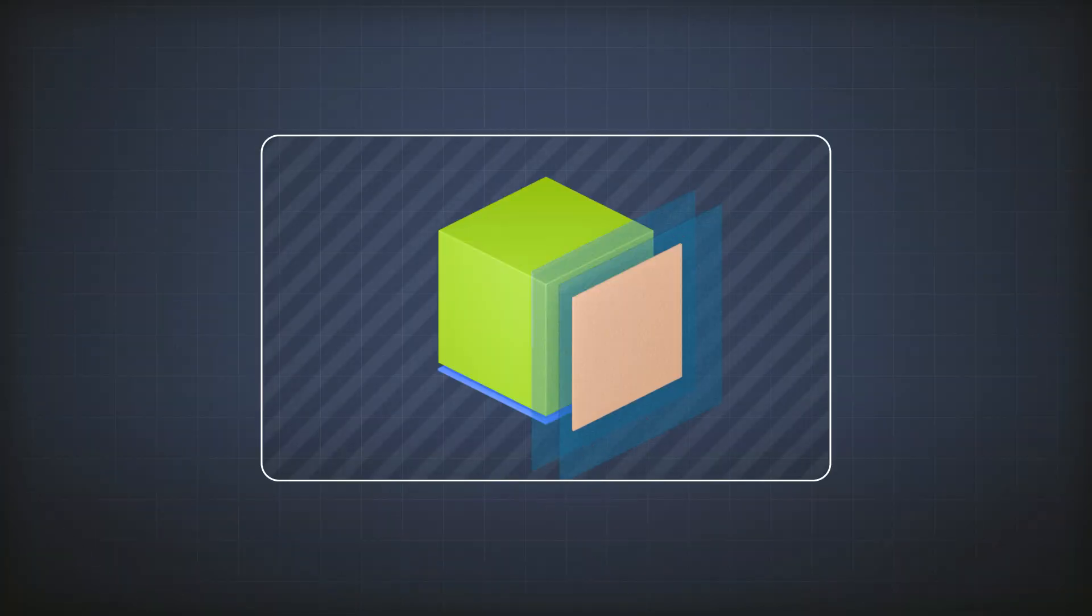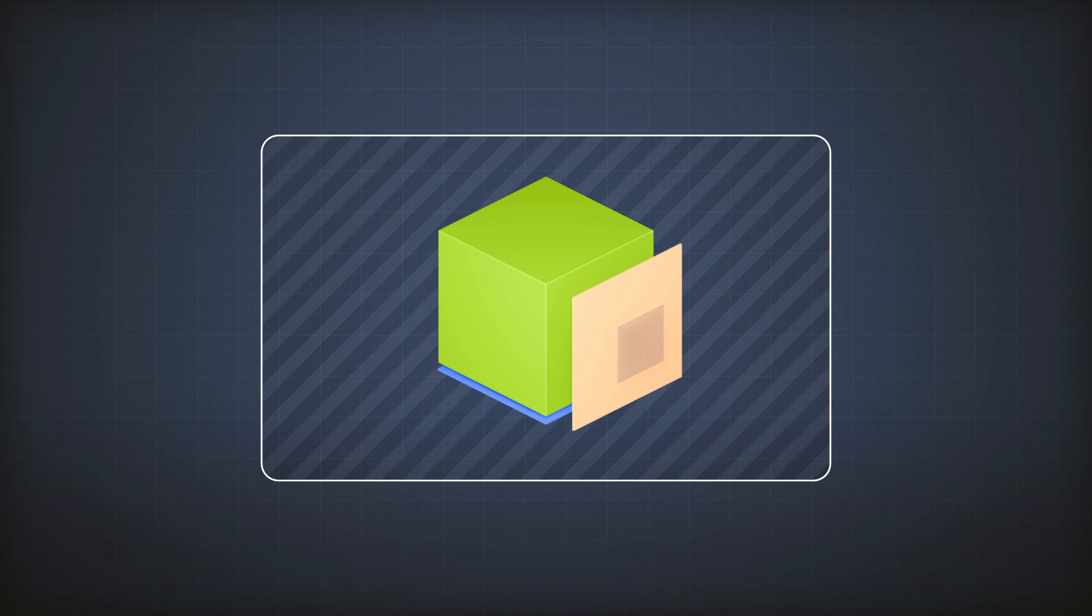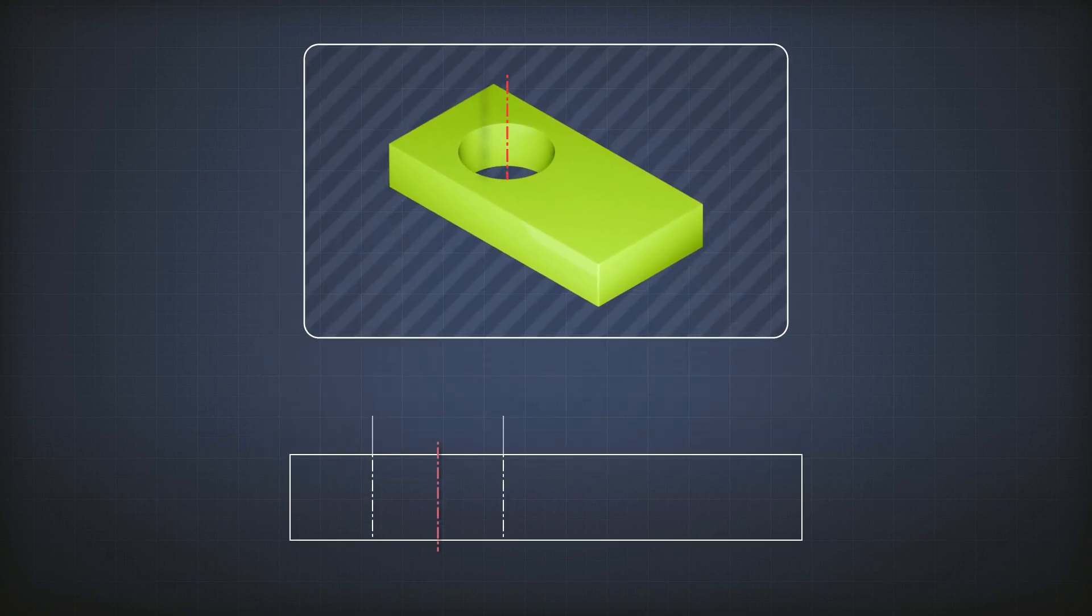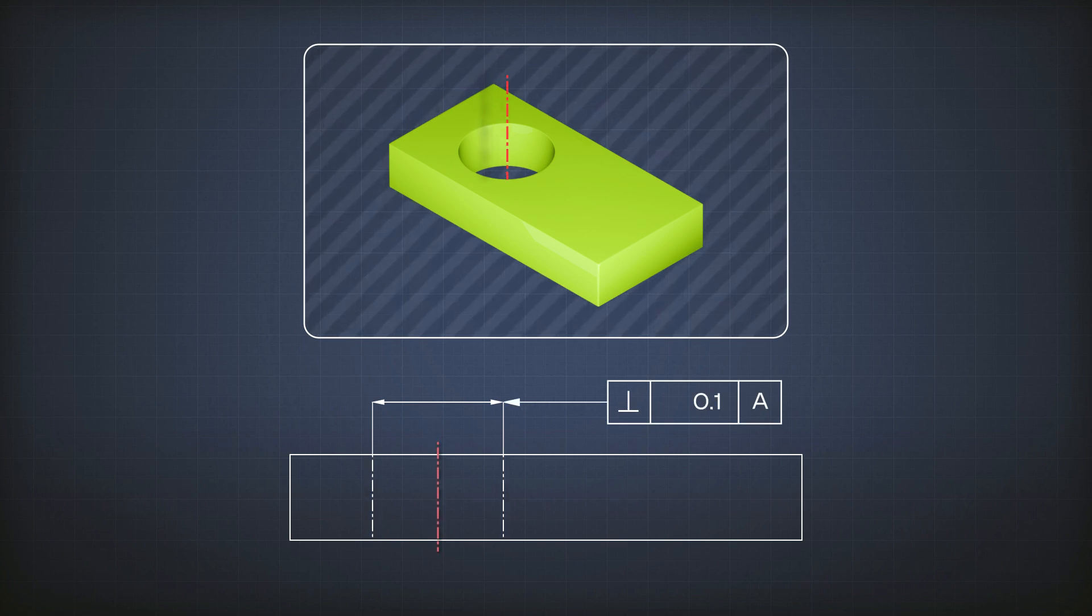I can also tolerate a line to surface A. If I have a hole here in the part, I point at the centre line by pointing at the dimension line, and say I want the centre line to be perpendicular with A with a value of 0.1.